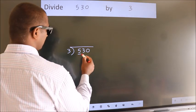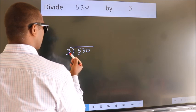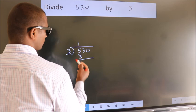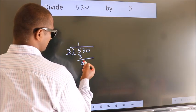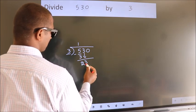Here we have 5, here 3. A number close to 5 in the 3 table is 3 once, which is 3. Now we should subtract. We get 2. After this, bring down the beside number. So 3 down, making 23.